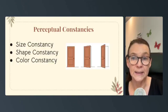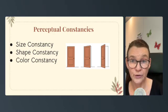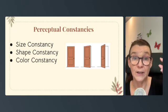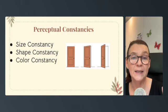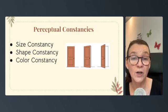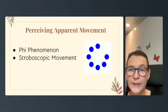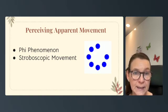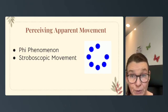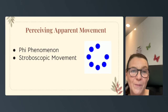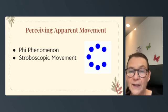Next, we'll look at perceptual constancies: size constancy — the perception of an object's size remains the same even when the image size on the retina changes; shape constancy — objects are perceived as maintaining the same shape even when viewed from different angles; and color constancy — the brain maintains the perception of consistent color under varying lighting conditions. We'll also talk about perceiving apparent movement. The phi phenomenon is when two adjacent lights blink on and off in succession and we perceive them as movement. Stroboscopic movement is when rapidly flashing images give the illusion of motion — like those little flip books from elementary school.